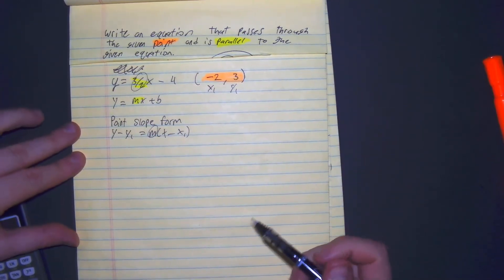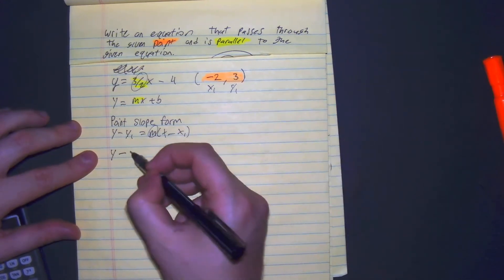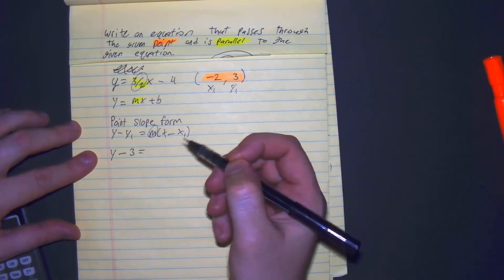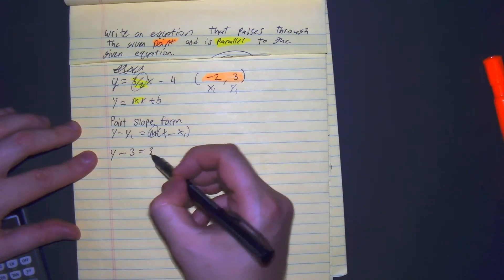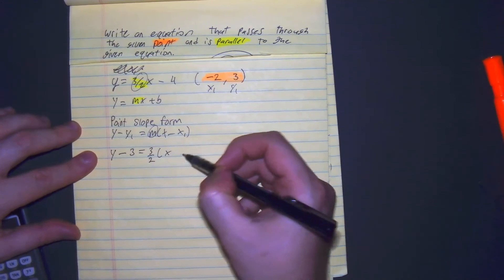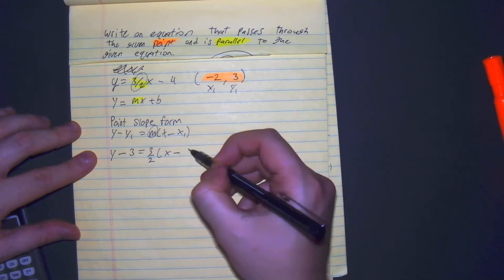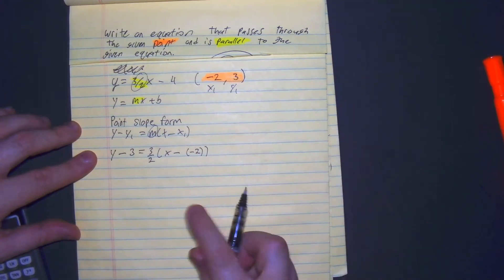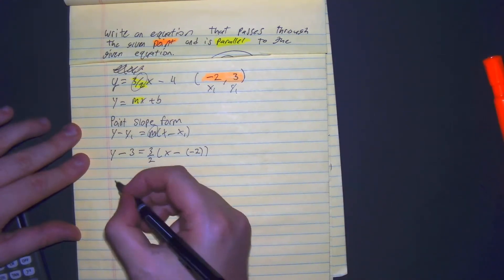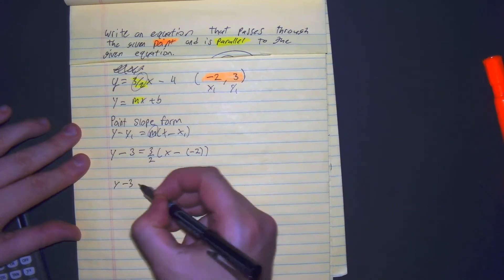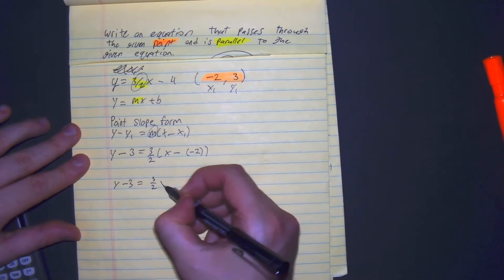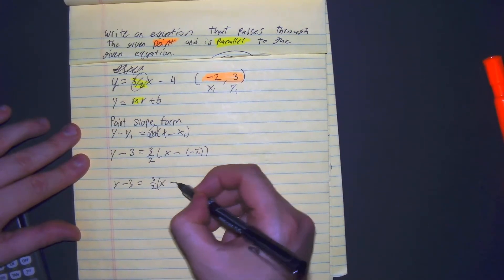So let's plug it in. We have y minus 3 is equal to 3 over 2, times x minus negative 2. From here, this will become a plus, and I'll rewrite it: y minus 3 equals 3 over 2, times x plus 2.